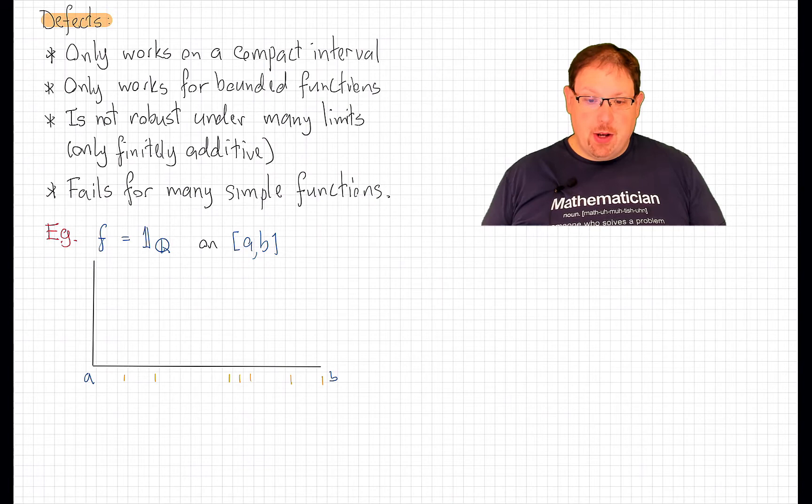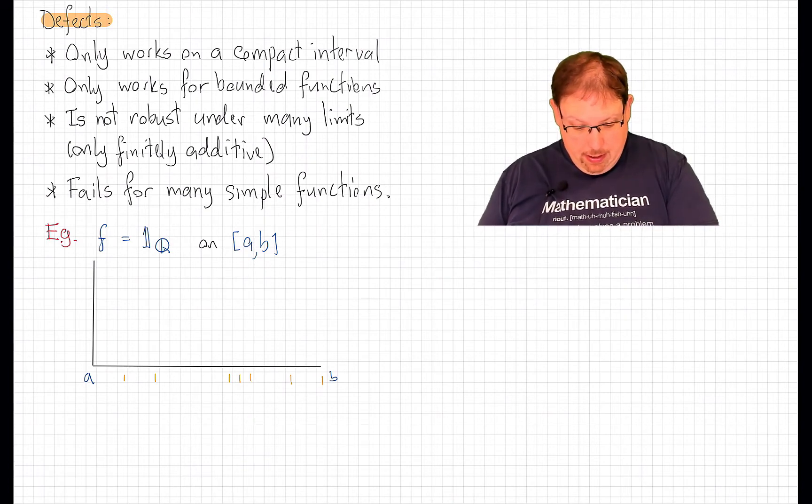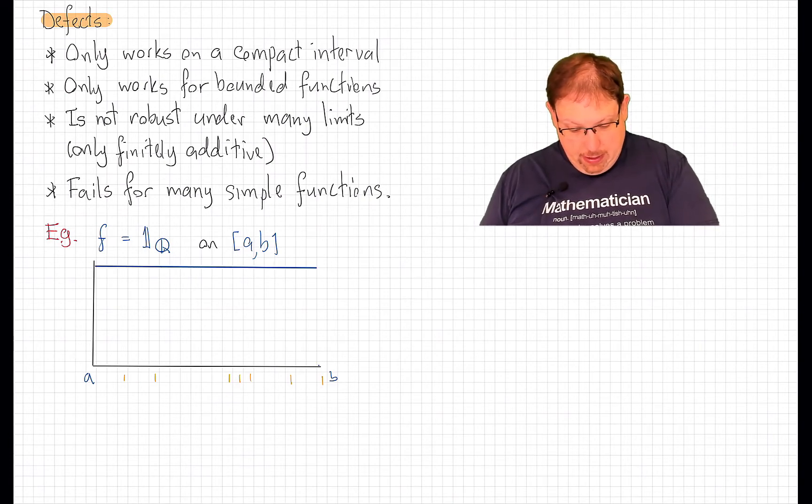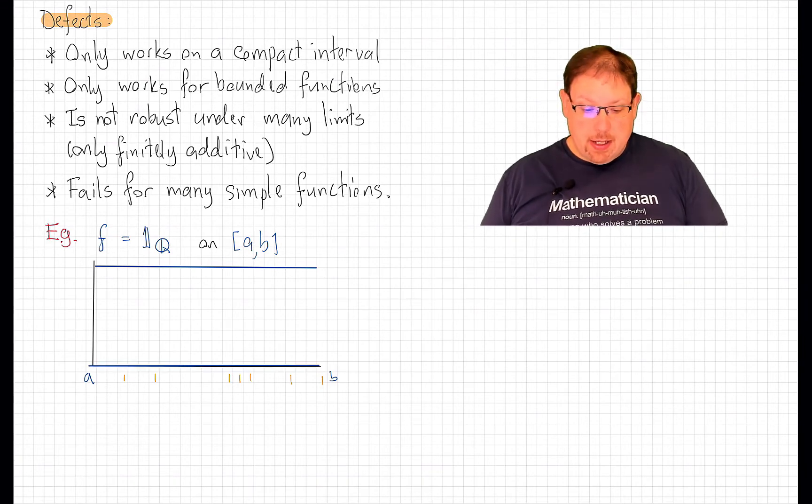It's very difficult to draw the graph of this function. It really does look like a solid line at height 1 and a solid line at height 0 to our eyes because the rationals and their complement, the irrationals, are dense in the real numbers.